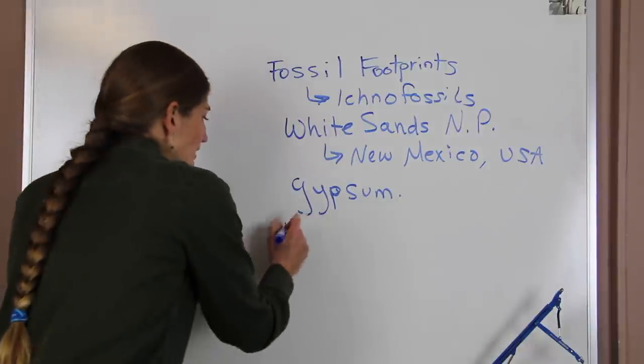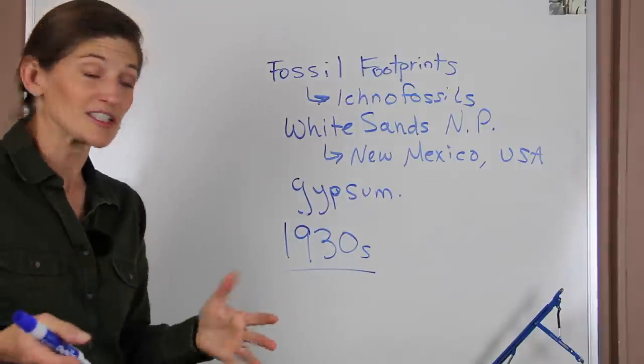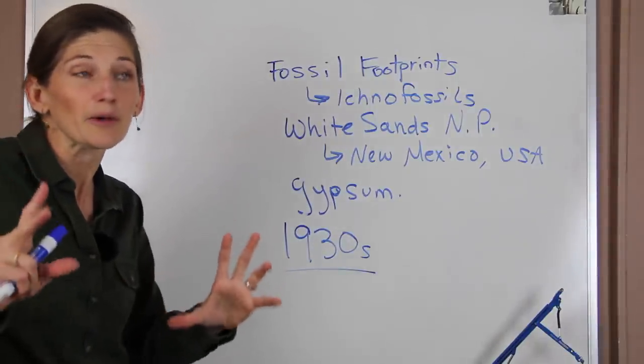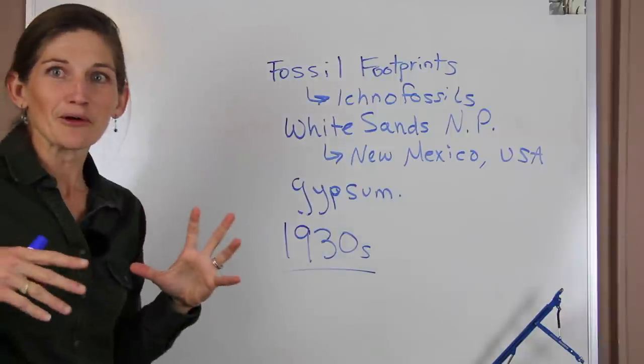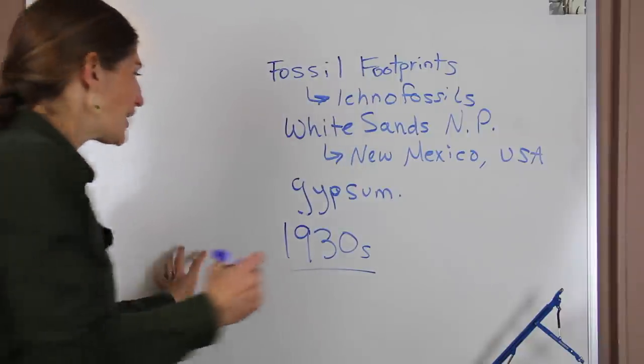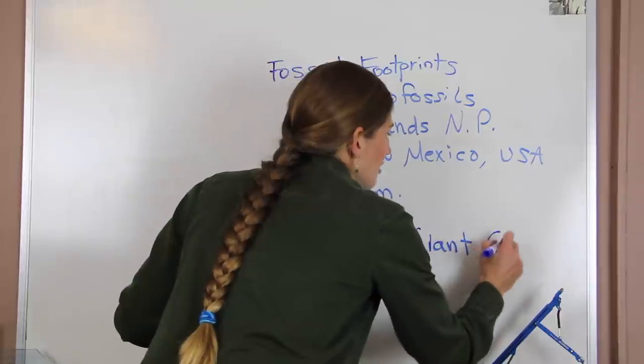The really cool thing about these fossils is that tracks have been known since the 1930s. They were first discovered way back in the 1930s and they were really big footprints. The early people who found them thought that this might be bigfoot, but it wasn't - these really big fossils were giant ground sloths.